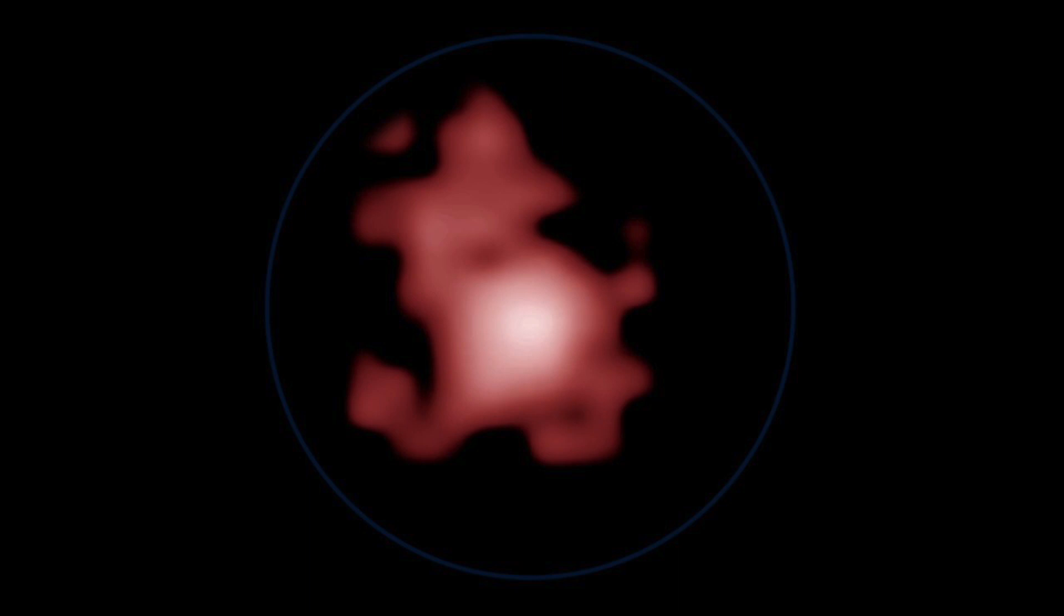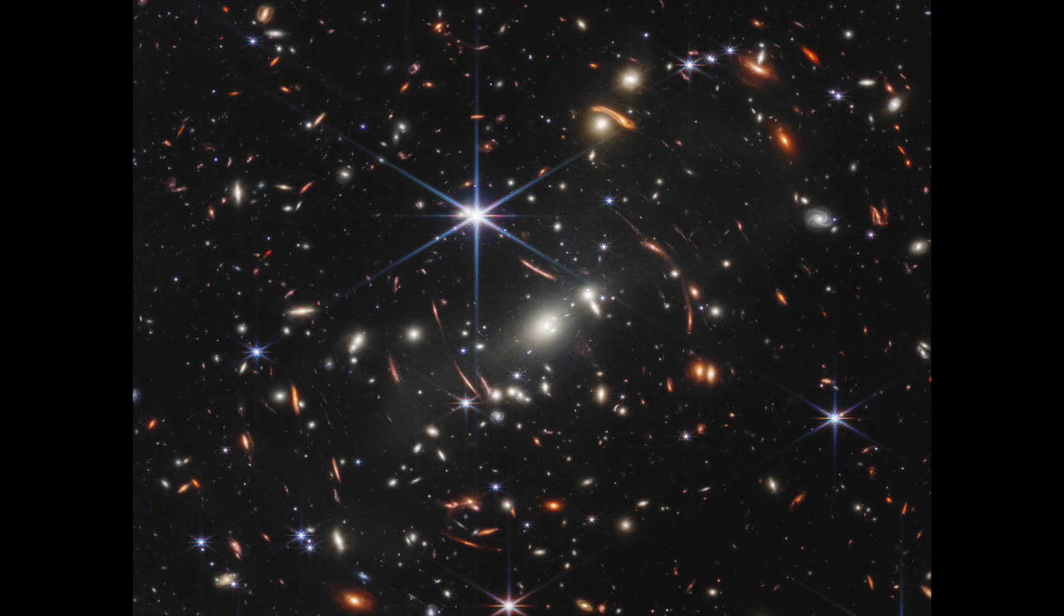However, due to the constant expansion of the universe, today's distance to GN-z11 is approximately 32 billion light years. One may argue that the speed with which it recedes exceeds the speed of light, but it doesn't clash with the special theory of relativity, as it isn't the matter that is receding but the space between the two objects is growing larger.